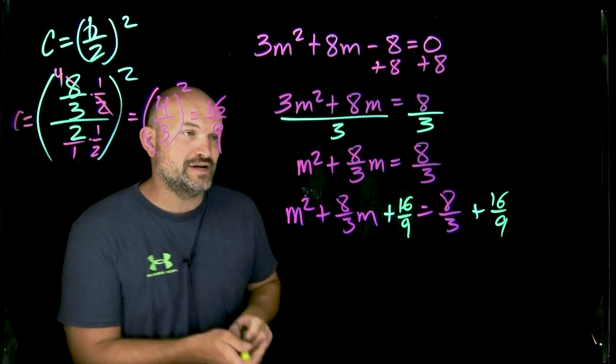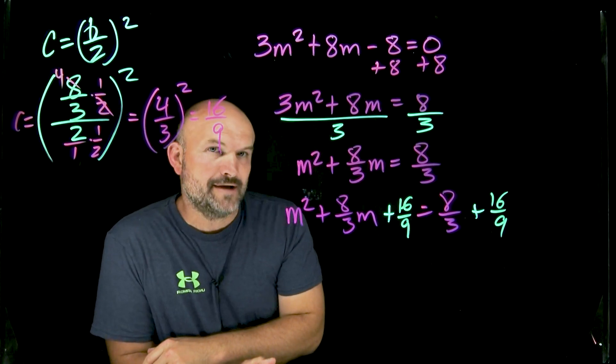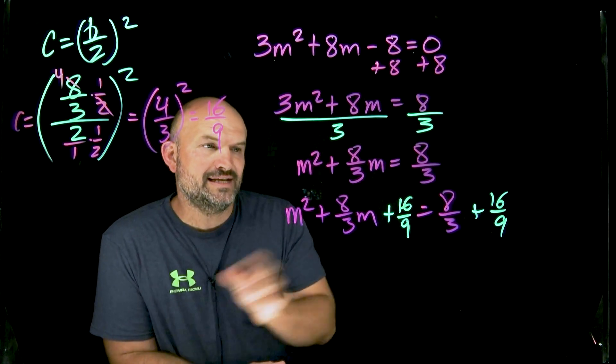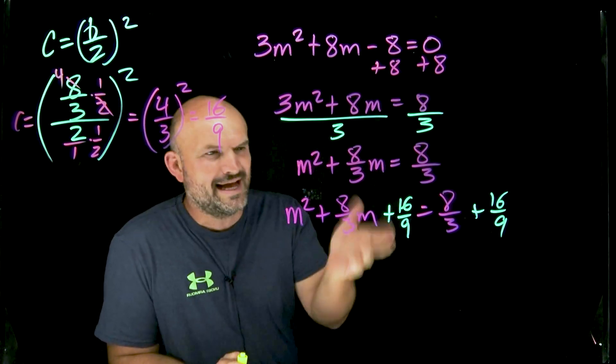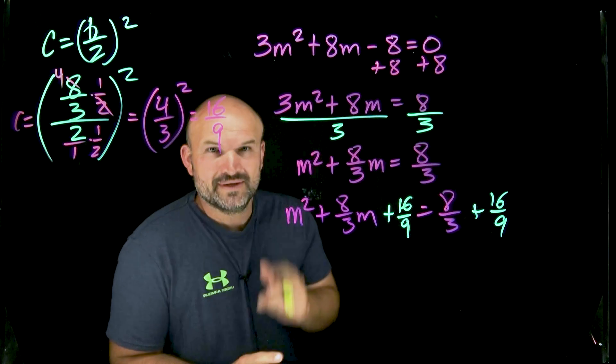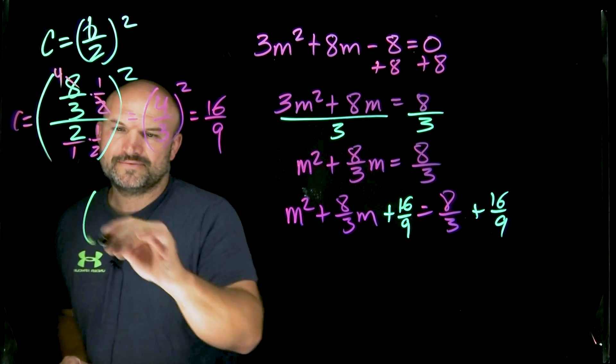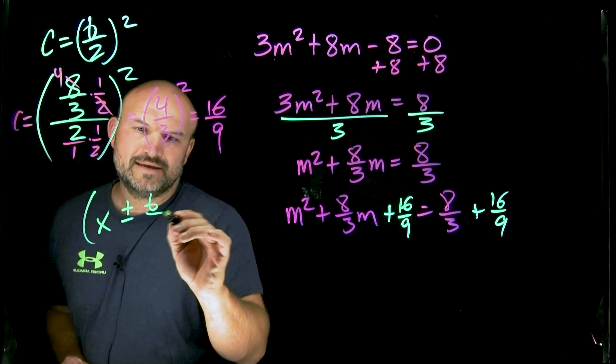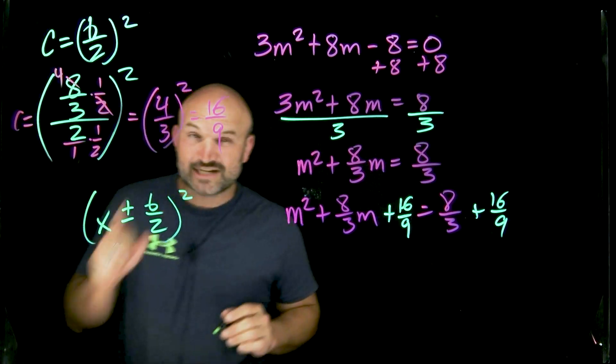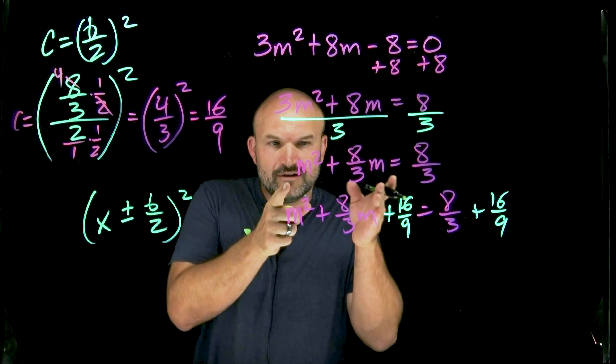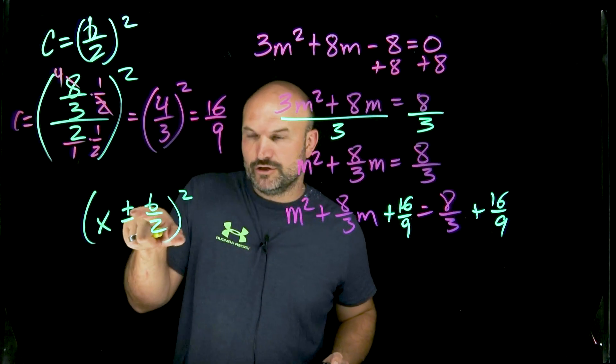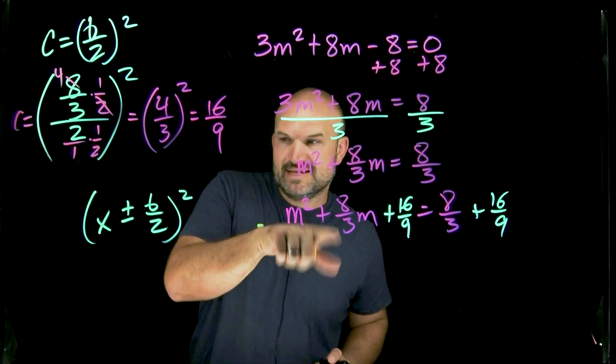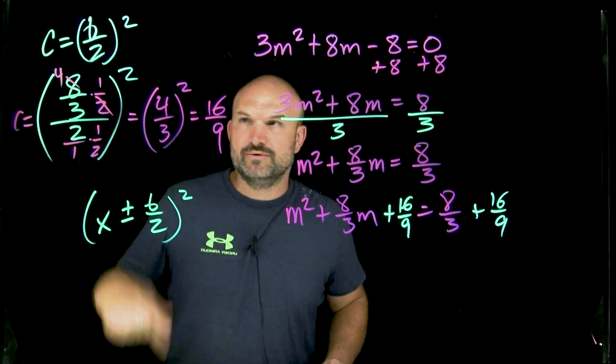All right. So now that I've created the 16 over 9, I need to factor this down. One of the things that I want you to understand is rather than trying to factor this, like what two numbers multiply to give you 16 over 9, that add to give you an eight-thirds, nobody's thinking of that. Here's a little special technique you guys can use. X plus or minus a B divided by 2 quantity squared is always going to be your binomial squared from a perfect square trinomial. I did plus or minus because if your middle term is positive, your binomial is going to be positive. If your middle term was negative, your binomial would be negative. So what was my B divided by 2? That was four-thirds.